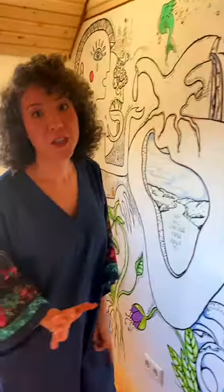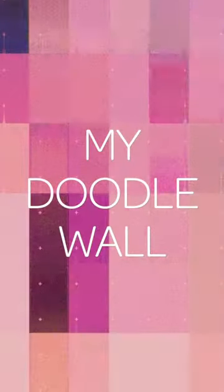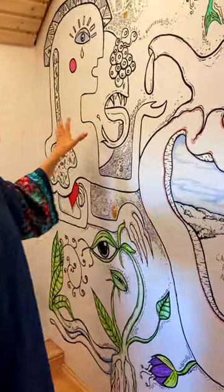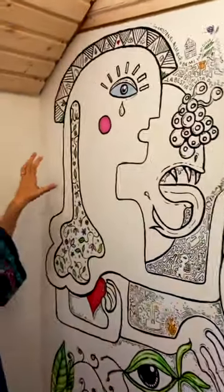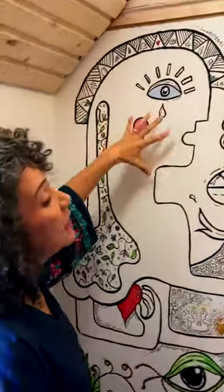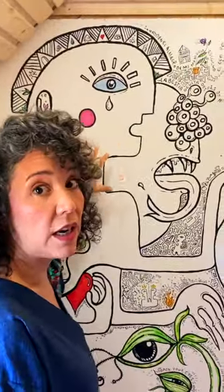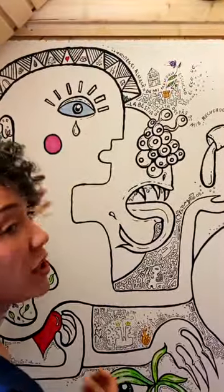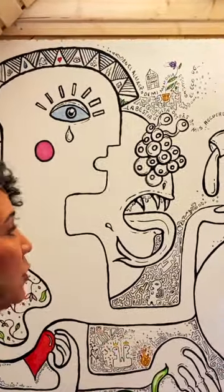I'm going to show you my recent book. In the left side of the doodle, I have the head. This is a symbol of me. I add it to initiate the process of the doodle.